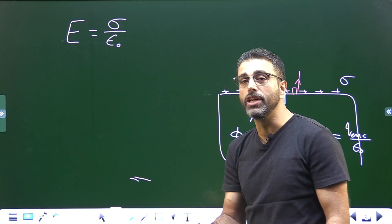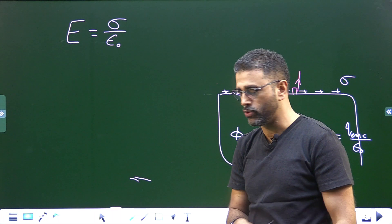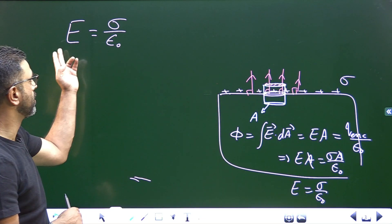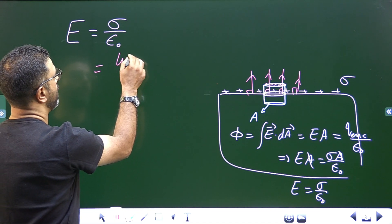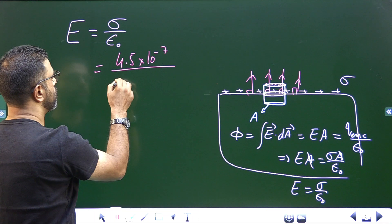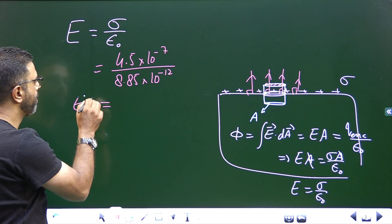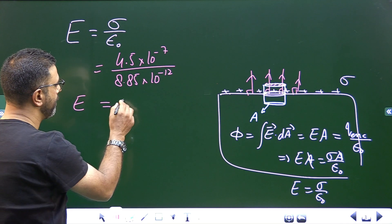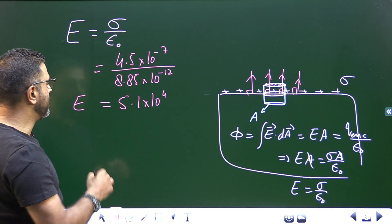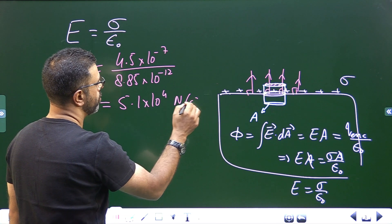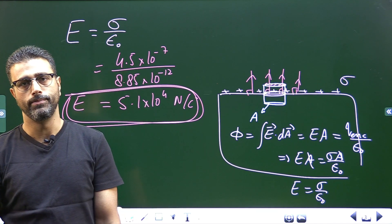Note: don't confuse this with the field due to a non-conducting charged sheet, which is sigma divided by 2·epsilon-zero. Using E = sigma / epsilon-zero: sigma is 4.5 × 10⁻⁷, divided by epsilon-zero = 8.85 × 10⁻¹². This comes out to 5.1 × 10⁴ newtons per coulomb, or volts per meter.